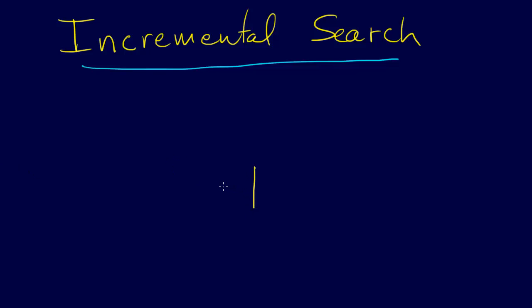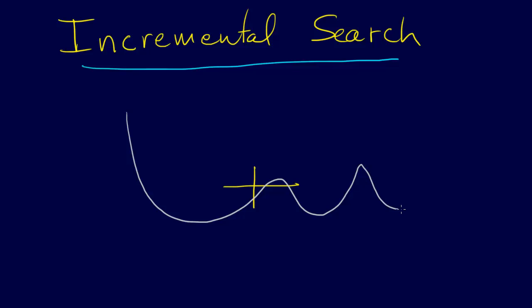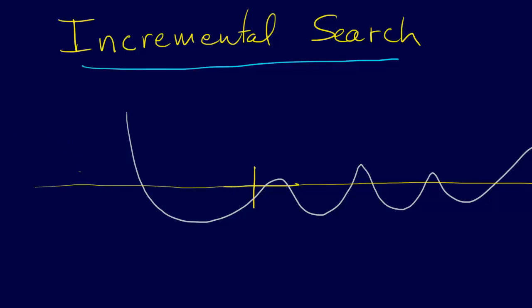So let's say we have our function and it looks something like this. What we do with incremental search is we just evaluate the function. So this is our function f of x, and this is our x-axis. We just evaluate our function periodically. We start at some point, wherever. So we start here, evaluate our function, and then we move a fixed interval, and evaluate our function again.